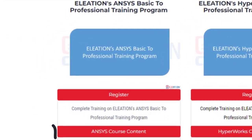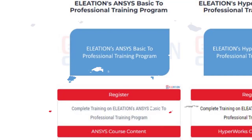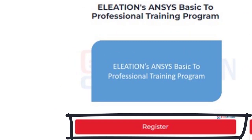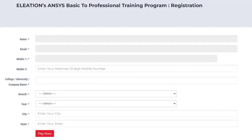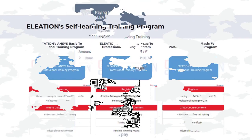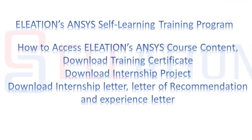Click on the ANSYS Course Content button to view all topics covered in Eliation's ANSYS Self-Learning Training Program. Under Eliation's ANSYS Basic to Professional Training Program, click on Register. On the registration page, enter the required details and click Pay Now. Select the mode of payment and complete the payment process. Once the payment is completed, you will find the Start Learning button under Eliation's ANSYS Self-Learning Training Program.